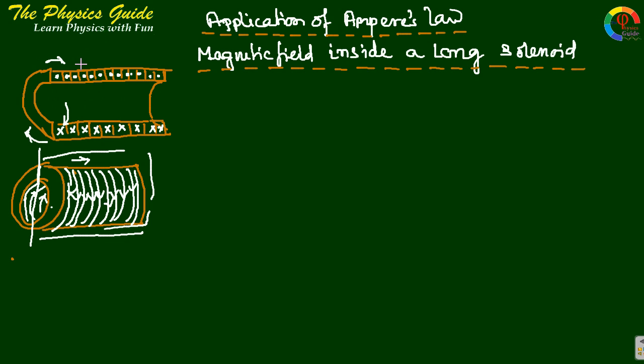To apply Ampere's law we just take an Ampere's loop. This is PQRS, and this is the direction of Ampere's loop.